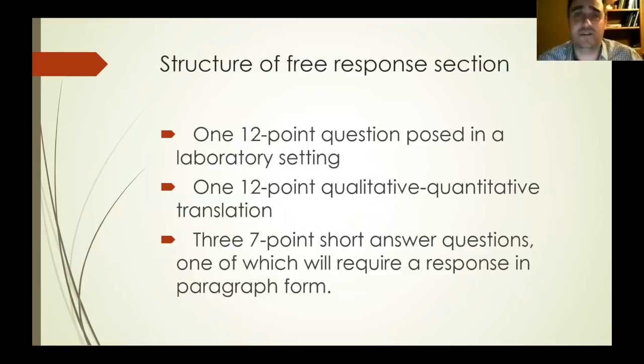So in the free response section, this is the part that students find the hardest. You have one 12 point question posed in a laboratory setting. So they give you a laboratory situation and you have to actually set up a lab, explain how you would conduct the lab, what materials you might need, and so on, and then give results for it. There's a 12 point qualitative quantitative translation, which is one where you have to write down possibly the equations for it or something mathematical, and then translate that into something that is in a paragraph form or qualitative. And then you have three seven point short answers, which a lot of times are in paragraph format.